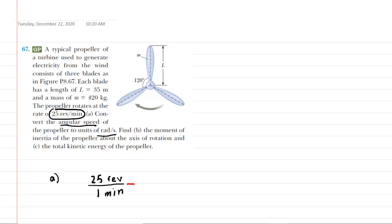Then what we're going to do is convert the minutes into seconds. We all know that 1 minute is equivalent to 60 seconds, so we're going to multiply by this conversion factor. Notice the way in which we set it up: the minutes in the denominator will cancel out with the minutes in the numerator. At this stage, we would have revolutions per second, but in part A we don't want revolutions per second — we want radians per second.